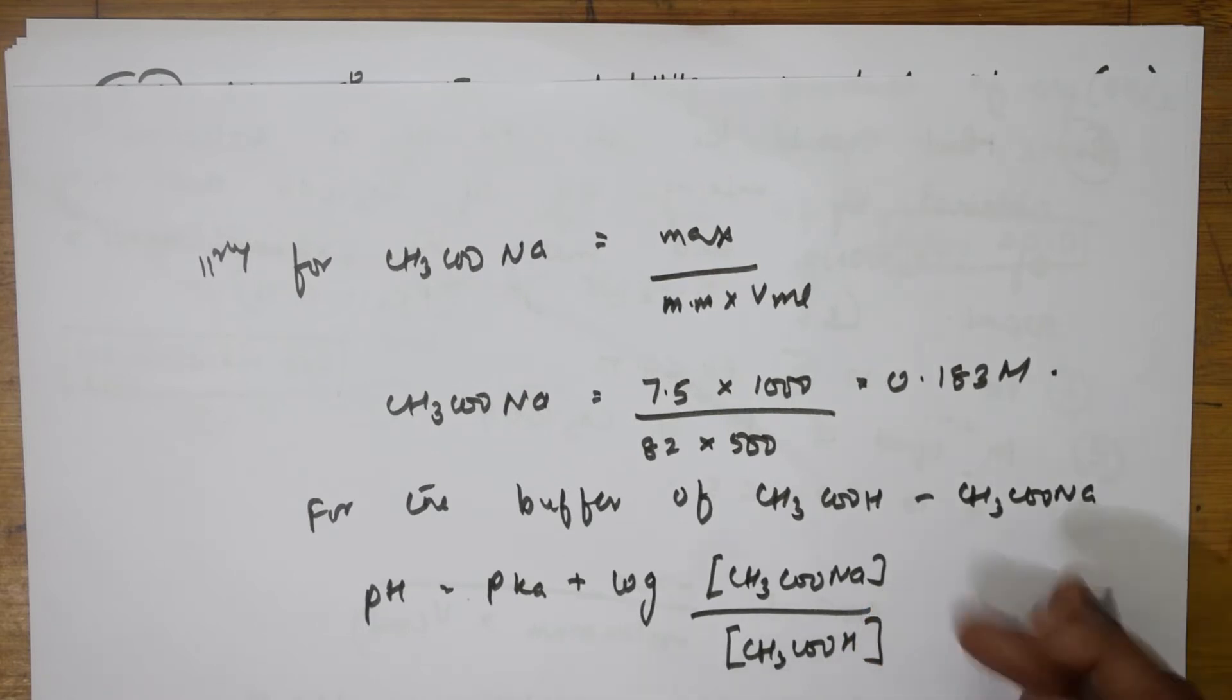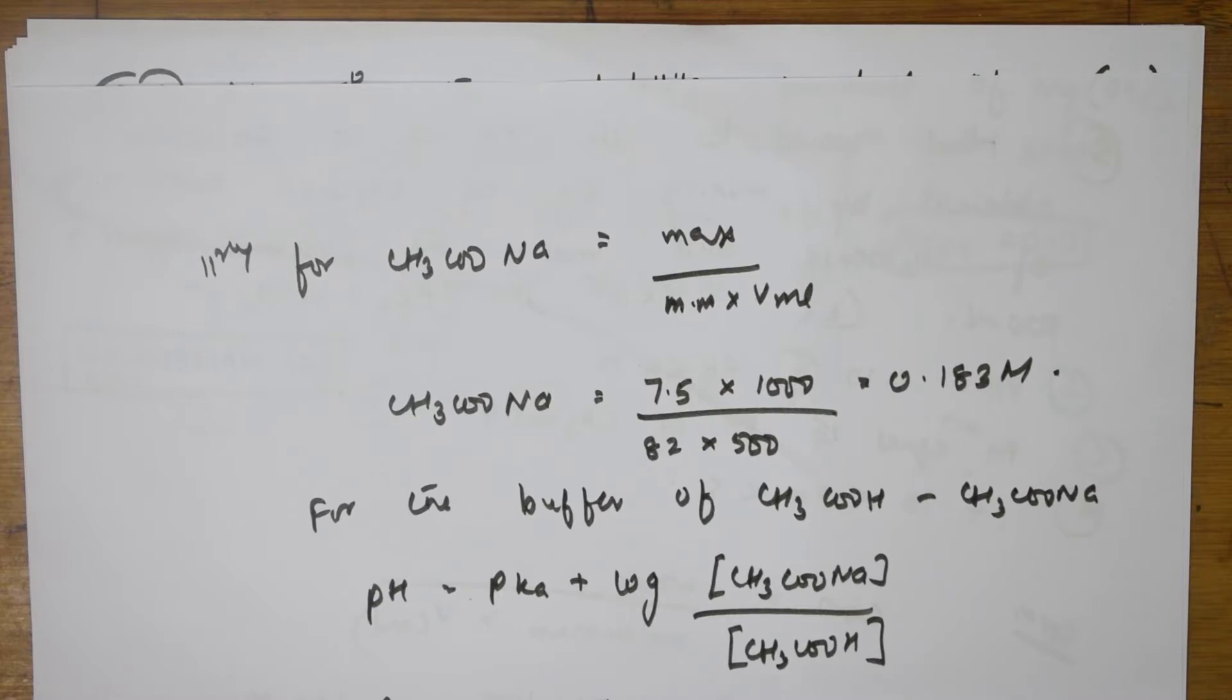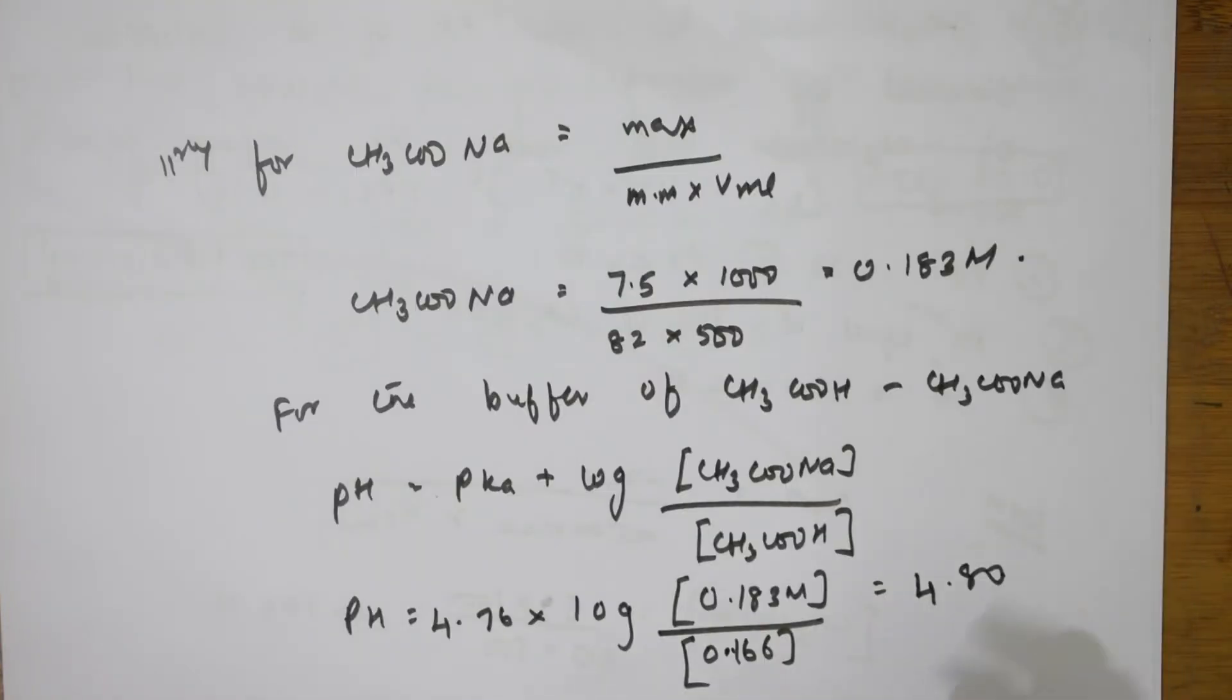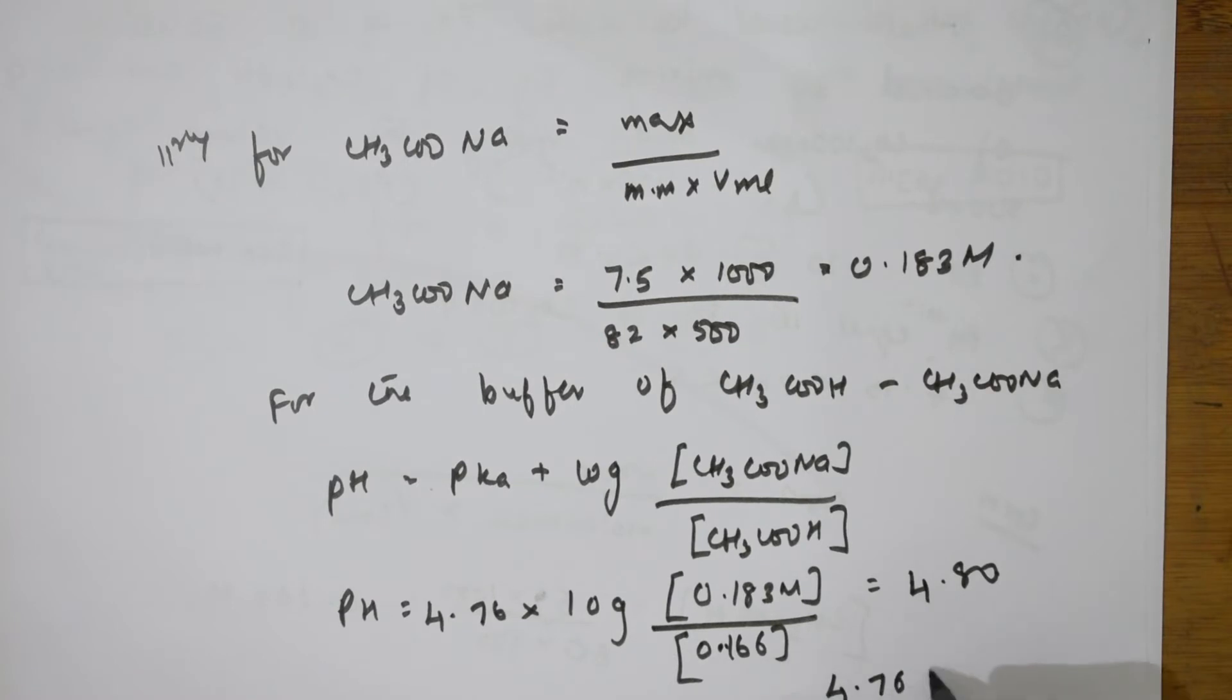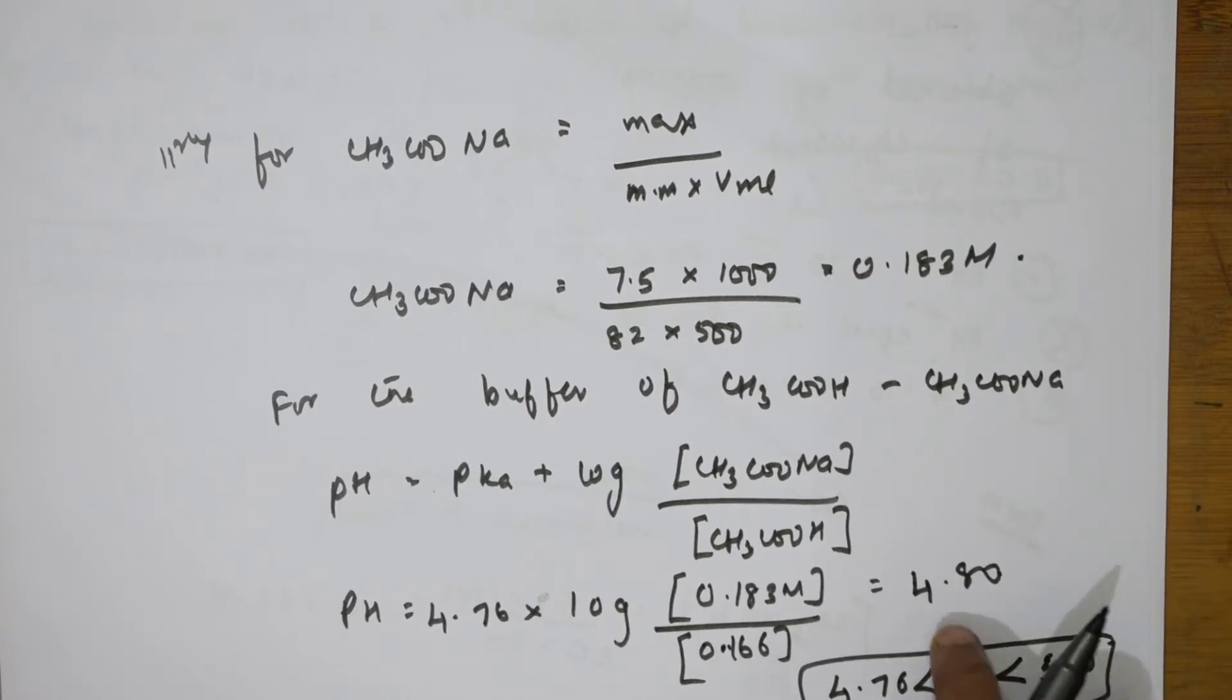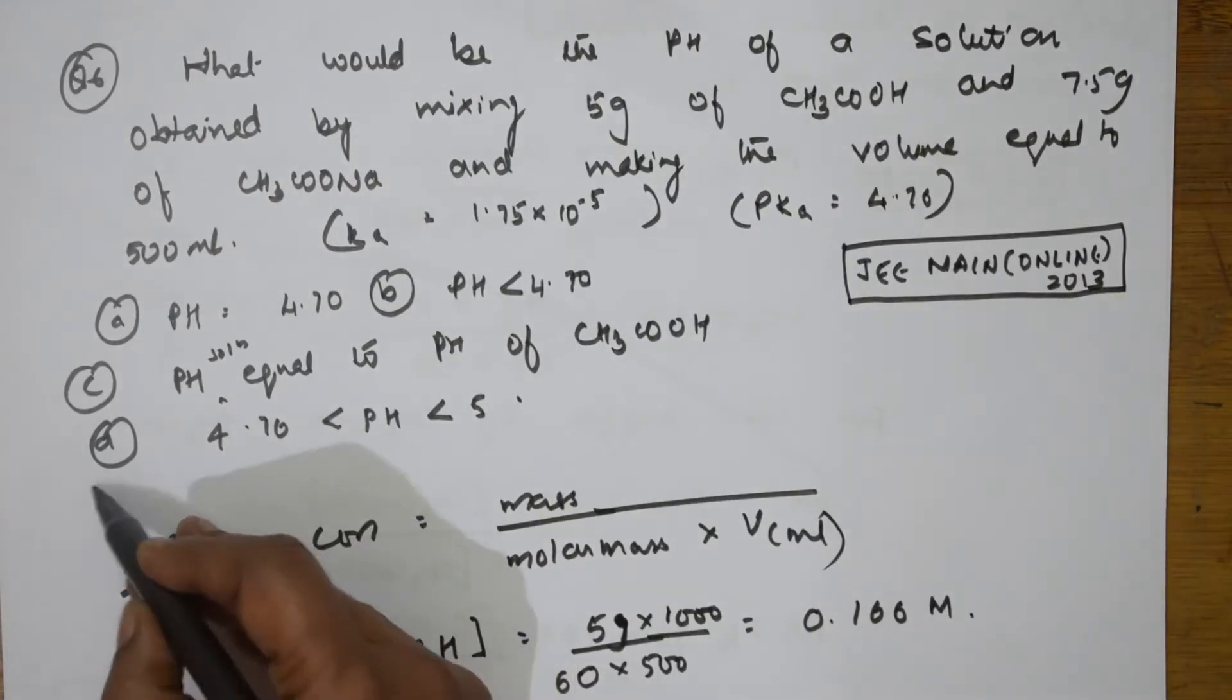How much is pKa which we got? 4.76 plus log, how much is this? 0.183 molar. And for acetic acid we got 0.166. When I solve this, I get an answer of 4.80. That means 4.76 is very much less than pH is very much less than 5. This is what the option means. Our answer lies at this option. So, the correct answer is this.